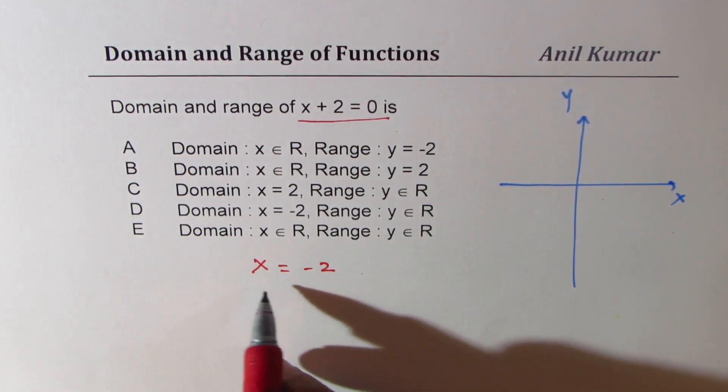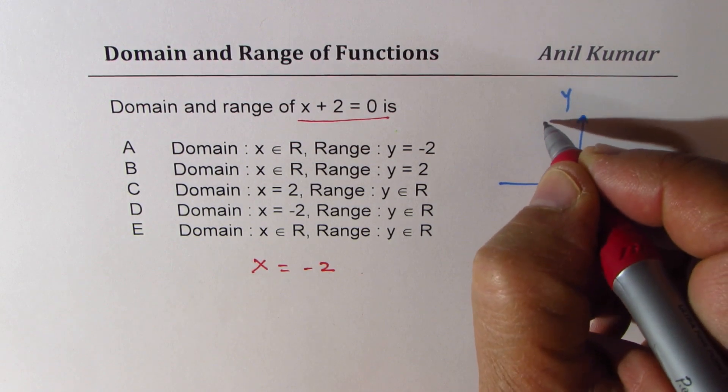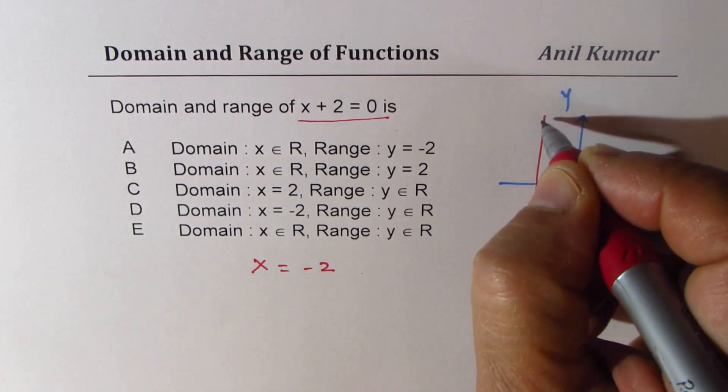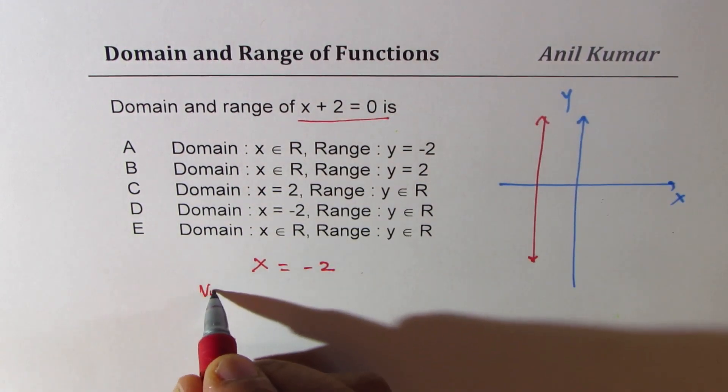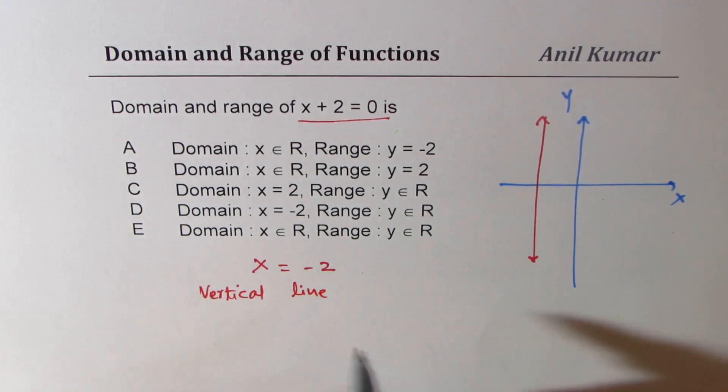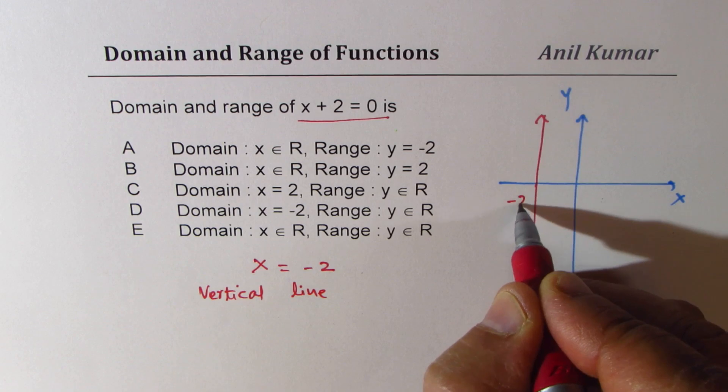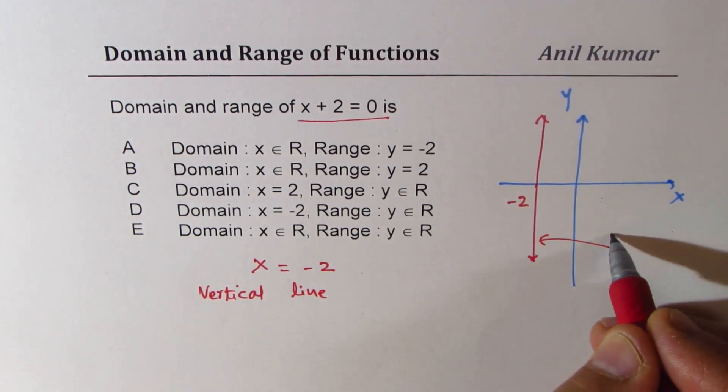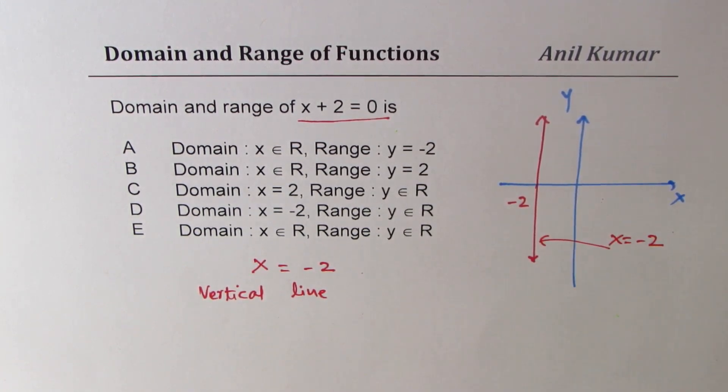It really means that the value of X is always minus 2, so it's kind of a vertical line. Do you see that? So this is a vertical line where the x-intercept is minus 2.